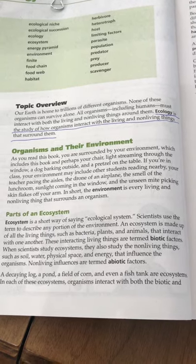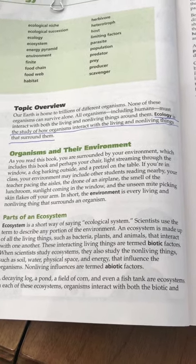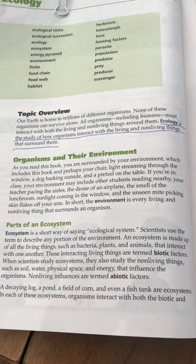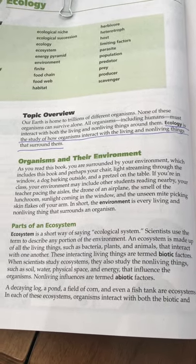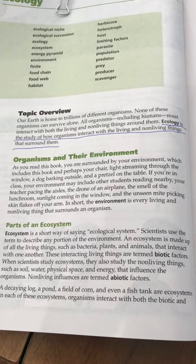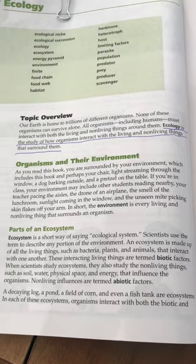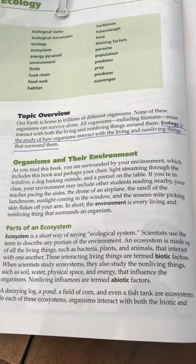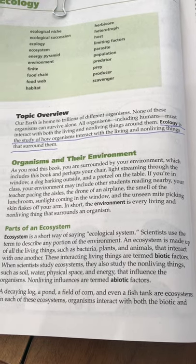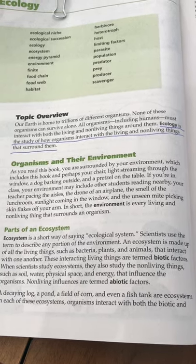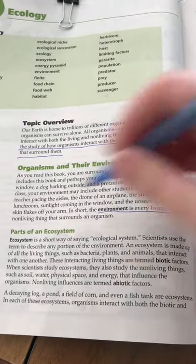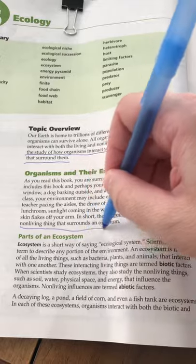Organisms and their environment. As you read this book, you are surrounded by your environment, which includes this book and perhaps your chair, light streaming through the window, a dog barking outside, and a pretzel on the table. If you're in class, your environment may include other students reading nearby, your teacher pacing the aisles, the drone of an airplane, the smell of the lunchroom, sunlight coming in the window, and the unseen mite picking skin flakes off your arm. In short, the environment is every living and non-living thing that surrounds an organism.